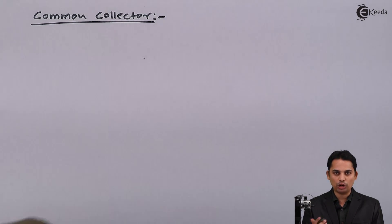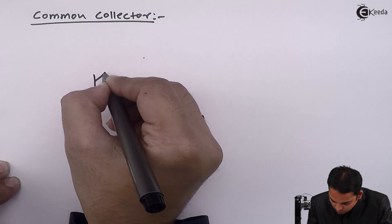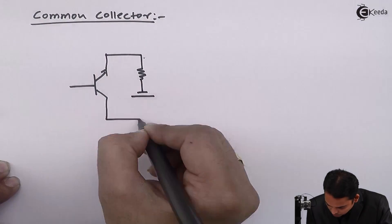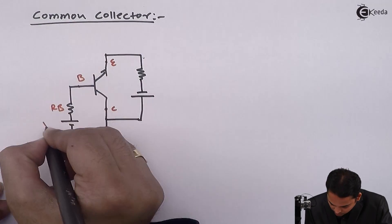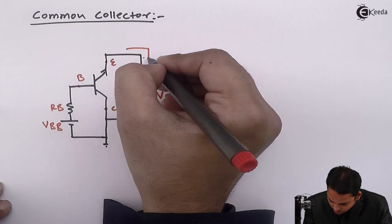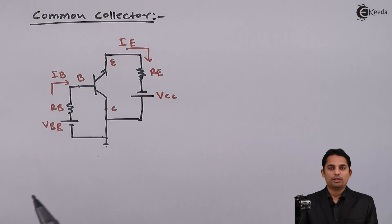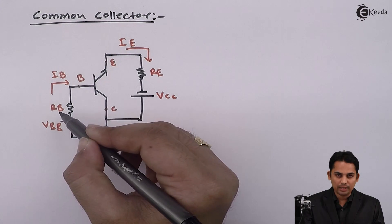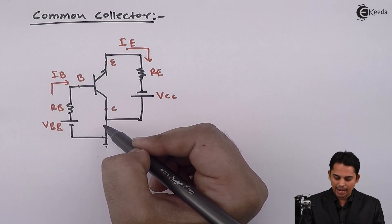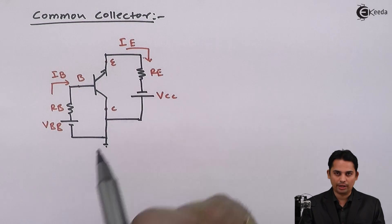There is a configuration called common collector, in which the collector is common, the base is the input, and the emitter is the output. This is the common collector circuit in which the collector is common between the input — that is, base to collector — and the output — that is, emitter to collector.